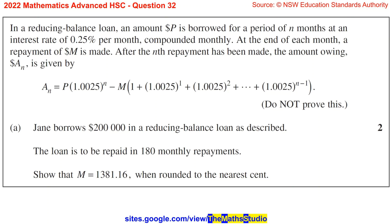After the Nth repayment has been made, the amount owing A_n dollars is given by A_n equals P times 1.0025 to the power of N minus M times the sum 1 plus 1.0025 to the power of 1 plus 1.0025 to the power of 2 plus dot dot dot plus 1.0025 to the power of N minus 1.